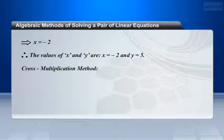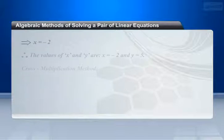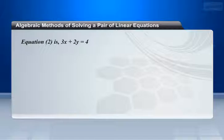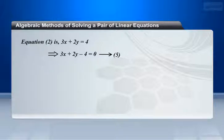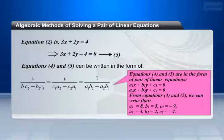Now we use the cross multiplication method. Equation 1 is 8x plus 5y equals 9, which can be written as 8x plus 5y minus 9 equals 0 — make it equation 4. Equation 2 is 3x plus 2y equals 4, which can be written as 3x plus 2y minus 4 equals 0 — make it equation 5. Compare equations 4 and 5 with the general form: a1x plus b1y plus c1 equals 0 and a2x plus b2y plus c2 equals 0.